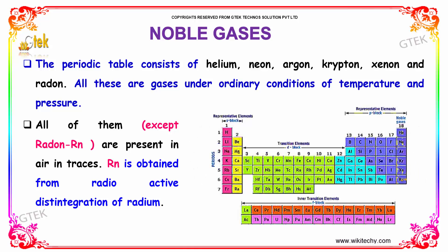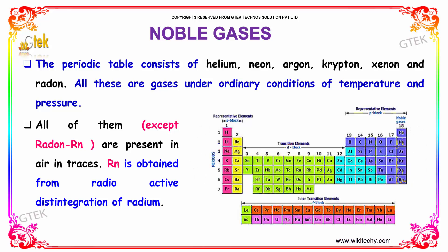All these are gases under ordinary conditions of temperature and pressure. All of them, except Radon, are present in air in trace amounts. Radon is obtained from the radioactive disintegration of Radium.